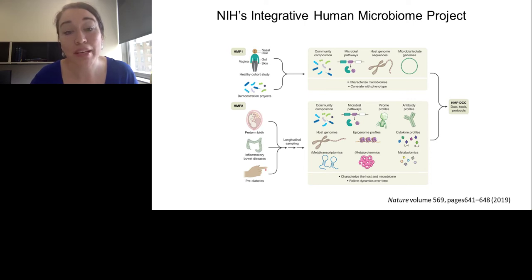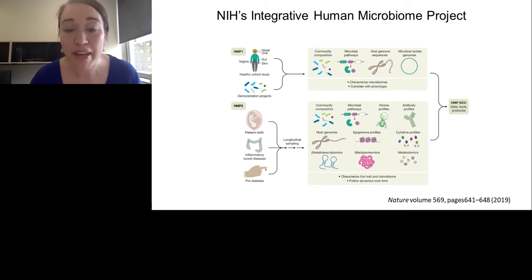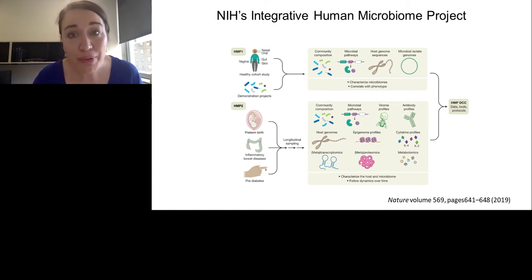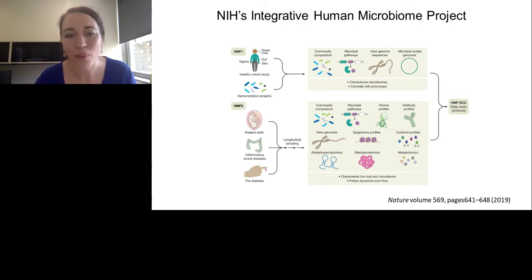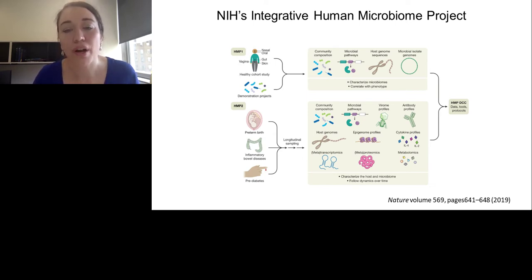Recently, the work from the HMP2 project, also known as the Integrative Human Microbiome Project, was published in a series of manuscripts in Nature Medicine and other Nature Family journals. I was part of the group from Virginia Commonwealth University focused on pregnancy and preterm birth. There were two other groups — one focused on inflammatory bowel disease and the other on prediabetes. What brought these projects together were the types of data and analyses common across all of them, looking at host-microbiome interactions with a longitudinal component.